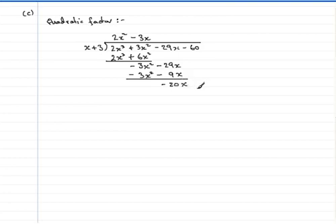Now we bring down the next term minus 60 and start all over again. What do I multiply this x by to give minus 20x? That's minus 20, so it goes up here. So minus 20 times the x plus 3 gives minus 20x, and minus 20 times plus 3 minus 60.